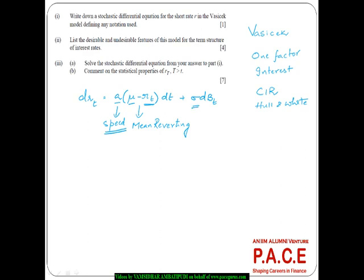Sigma is the volatility, which is typically treated as constant here, which may or may not be a real-world scenario. B is a standard Brownian motion following a normal distribution with mean 0 and variance t. So Bt is a standard Brownian motion, sigma is the constant volatility, 'a' is the speed of reversion, and mu is the long-term interest rate drift parameter.